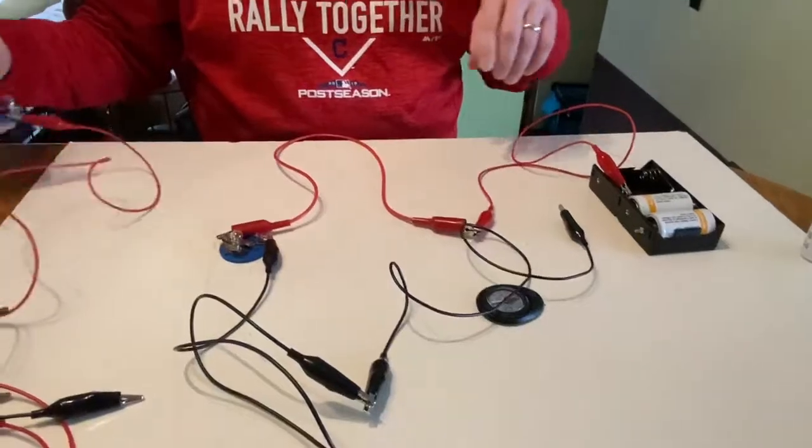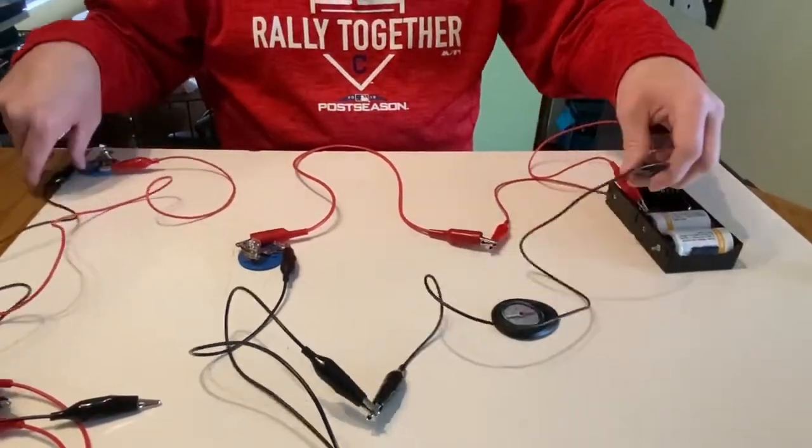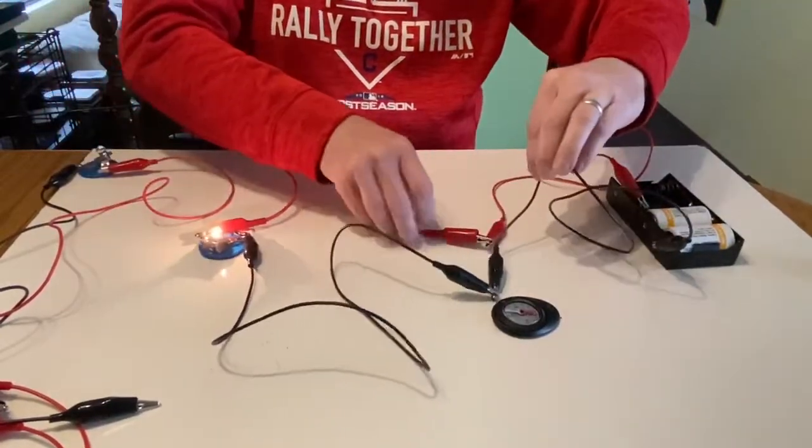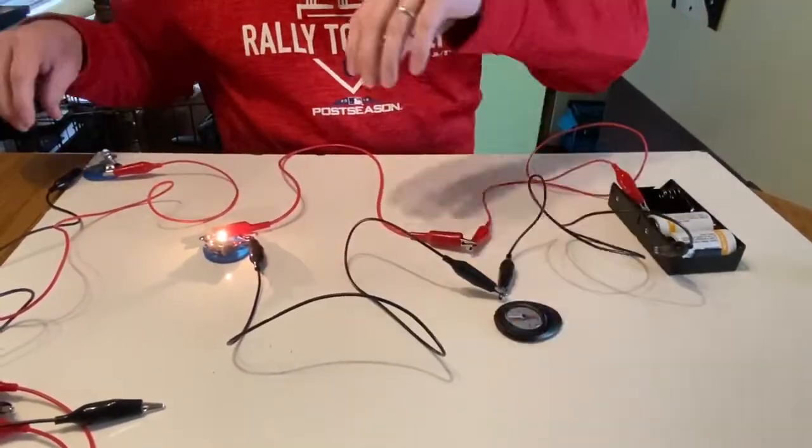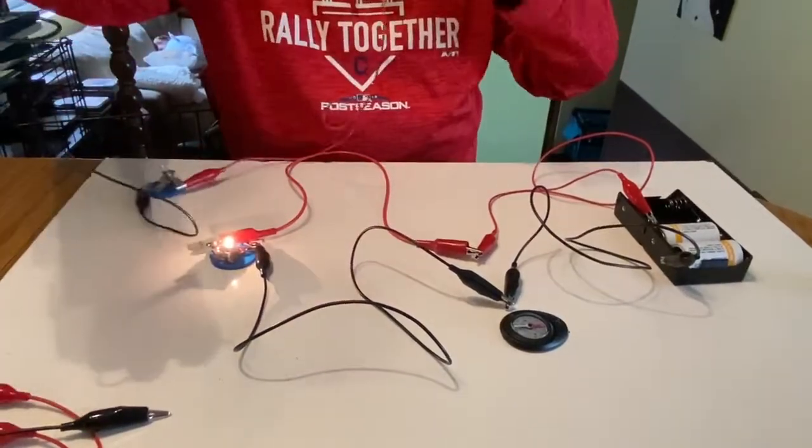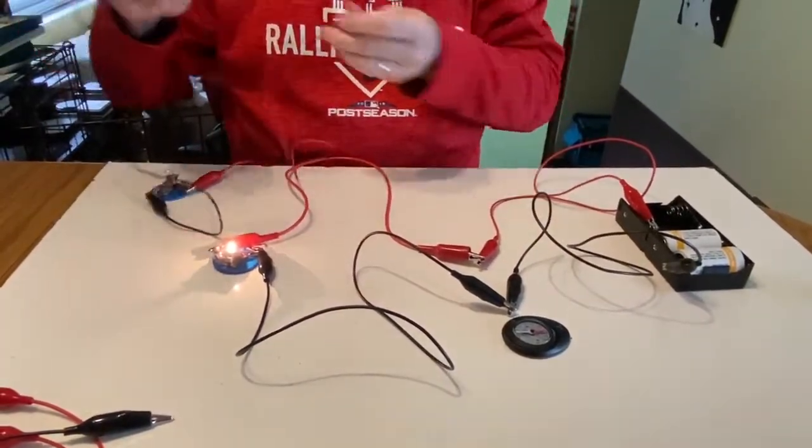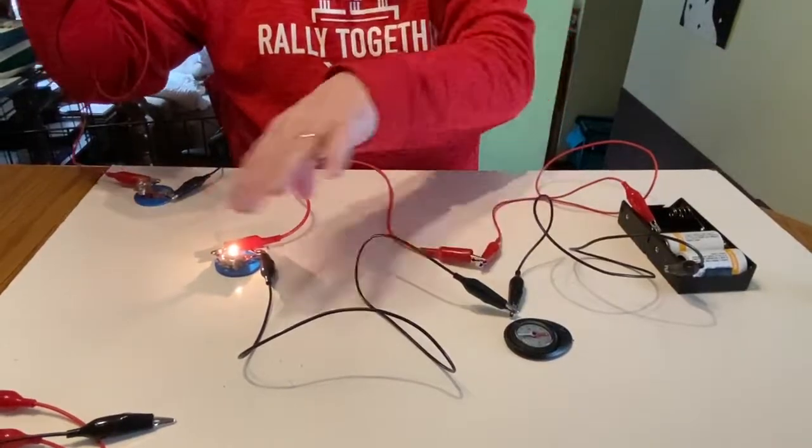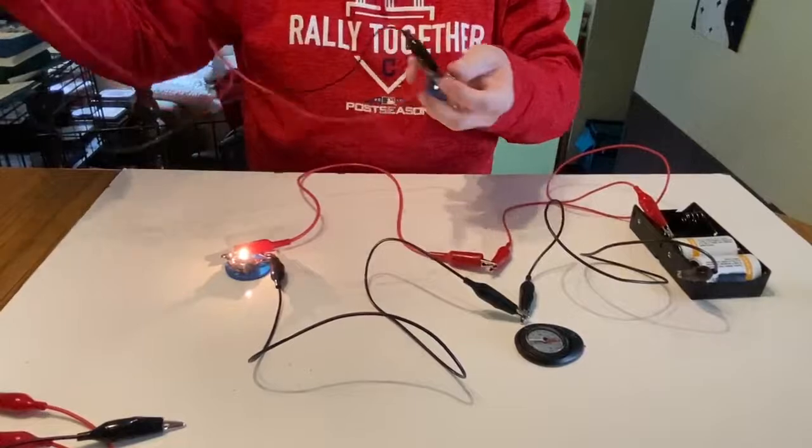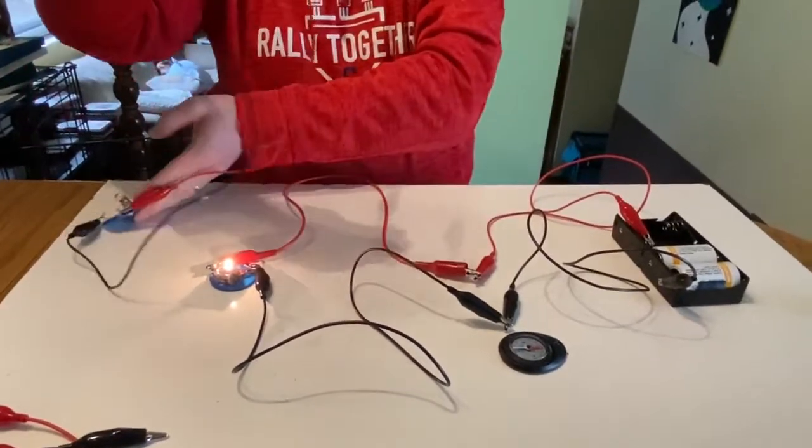And now I'm going to add another bulb. We can see here, I've got a little extra wire, because I want to make another loop. I don't want to interrupt this loop at all. I want this loop to still exist, but I want this bulb now to have its own loop.